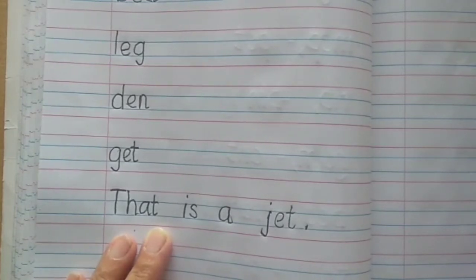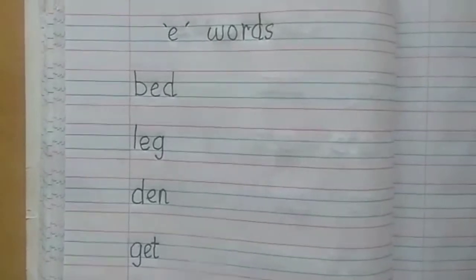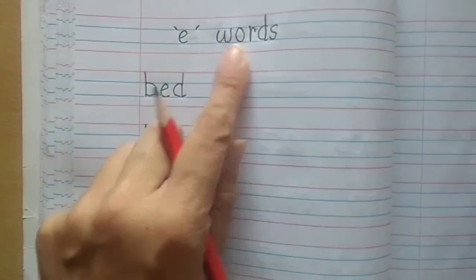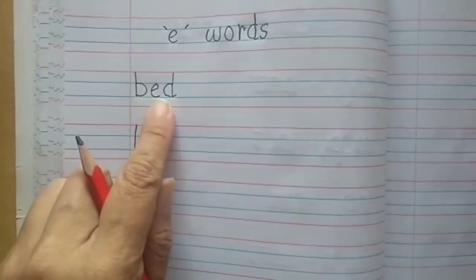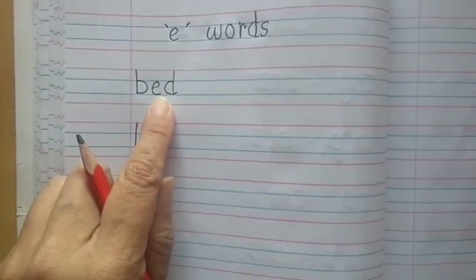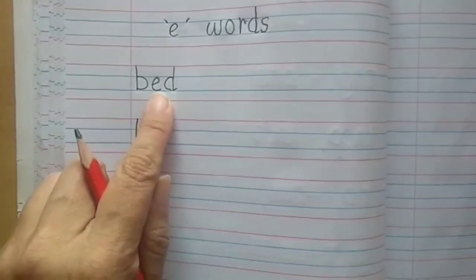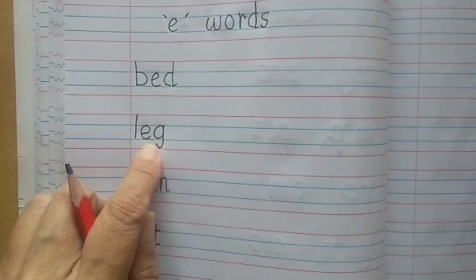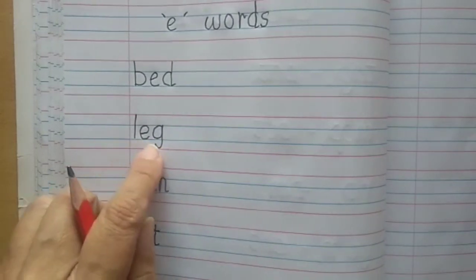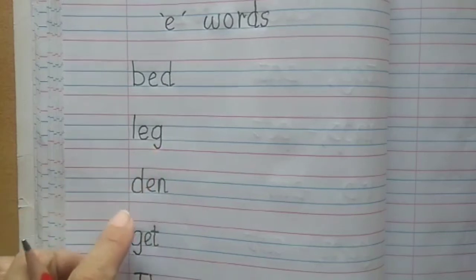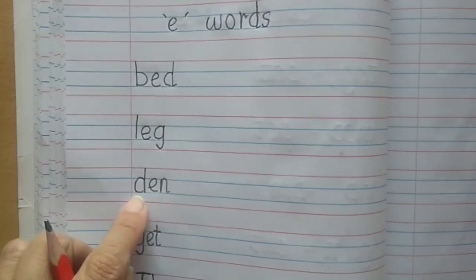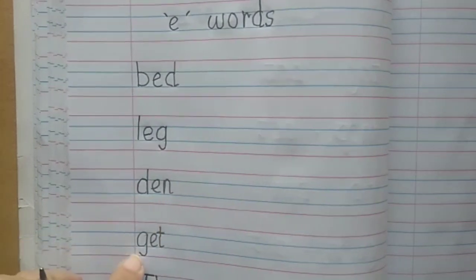Now let us read the words which we have written along with the sentence. Let's read it and you should read the way I am reading. E words. Bed. Leg. Den. Get.